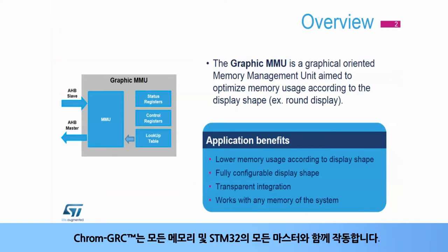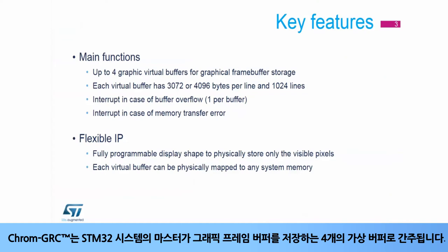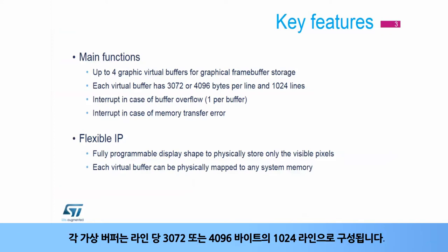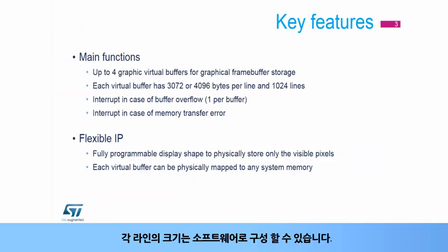The Chrome GRC works with any memories and any masters of the STM32. It is seen by the masters of the STM32 system as four virtual buffers to store the graphical frame buffer. Each virtual buffer consists of 1,024 lines with 3,072 or 4,096 bytes per line. The size of each line is configurable by software.